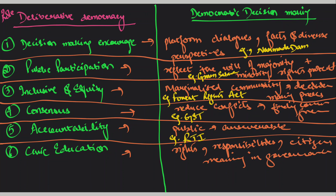Jansunwai में ration distribution जैसी problems solve होती हैं — directly citizens के grievances address होते हैं, जिससे institutions पर trust build होता है। यह well-researched answer में accountability में लिखा जा सकता है। Well-researched answer की structure में: introduction में deliberative democracy की definition दो। फिर explain करो कि citizens को कैसे empower करती है — public consultation, draft data protection bill जैसे examples। Legitimacy enhance करने के लिए Habermas का discourse ethics — decisions जो free and fair discourse से derive होते हैं, वो ज़्यादा legitimate होते हैं।